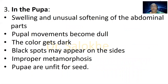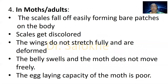Symptoms in pupae: swelling and unusual softening of the abdominal parts, pupal movements become dull, the color gets dark, and black spots may appear on the sides of the body. Improper metamorphosis — meaning the change in morphology is irregular — affects development. Pupae are unfit for seed. Symptoms in moths or adults: scales fall off easily forming bare patches on the body, scales get discolored, the wings do not stretch fully and are deformed, the belly swells and the moth does not move freely, and the egg-laying capacity of the moth is poor.